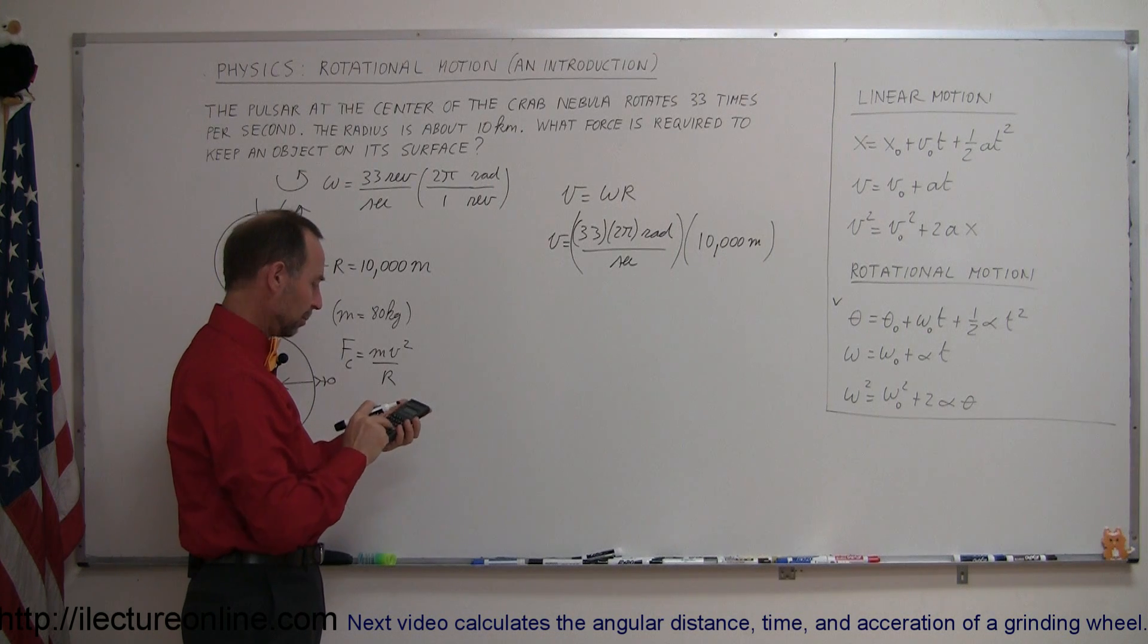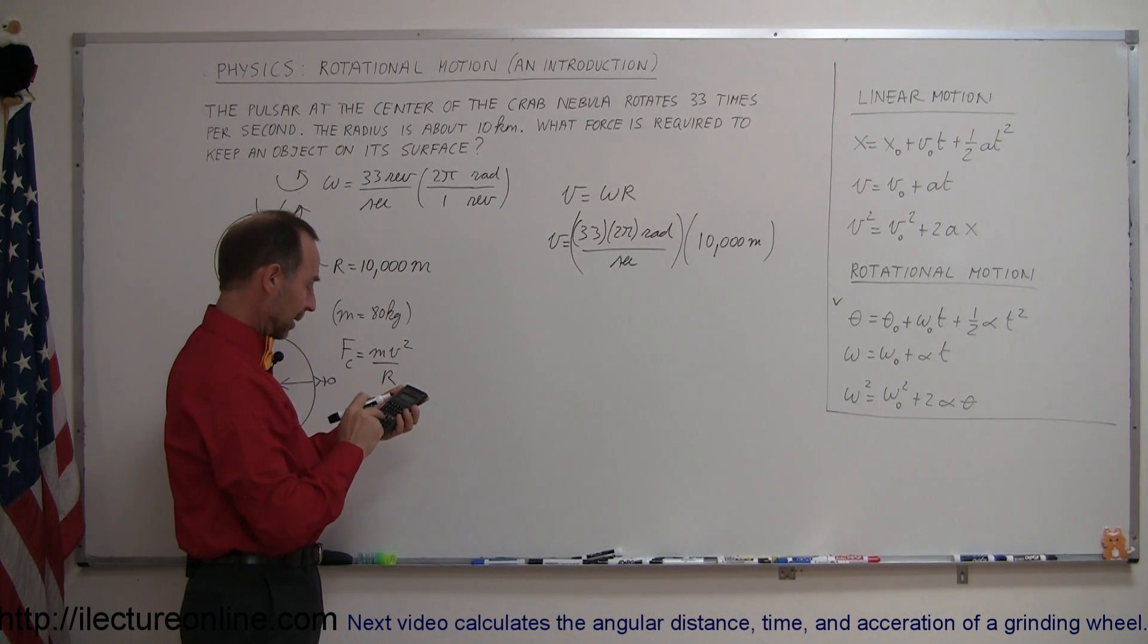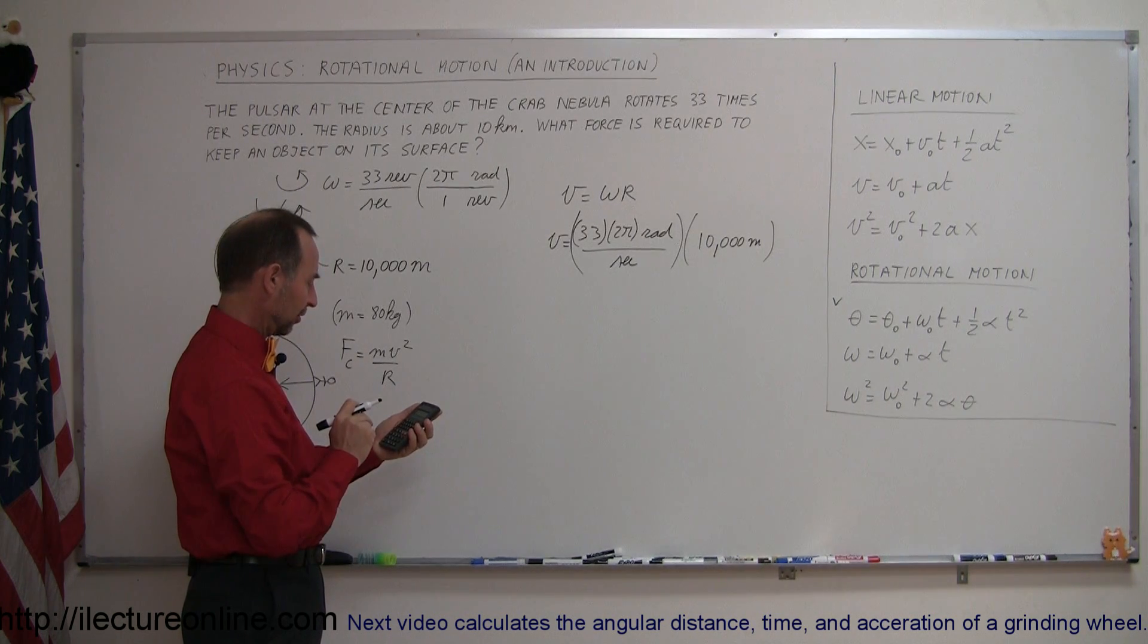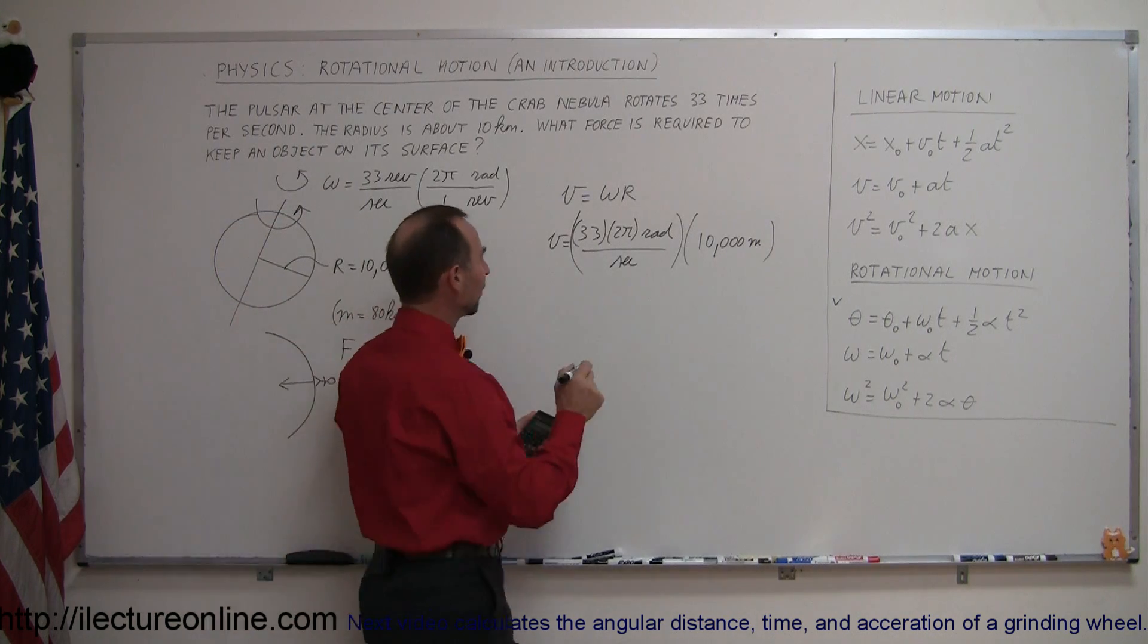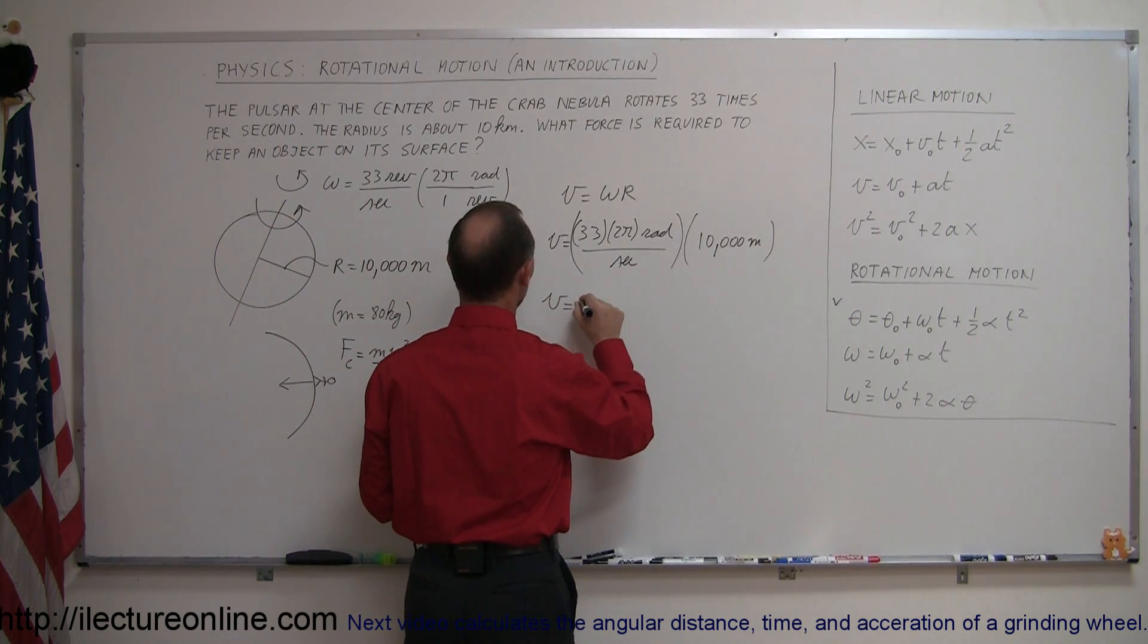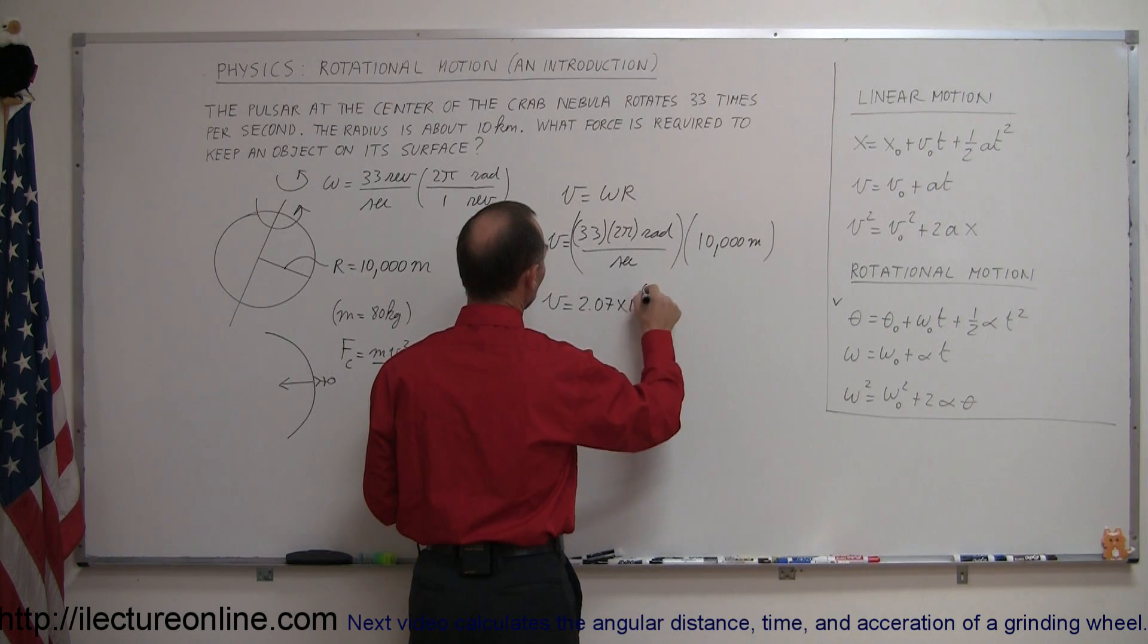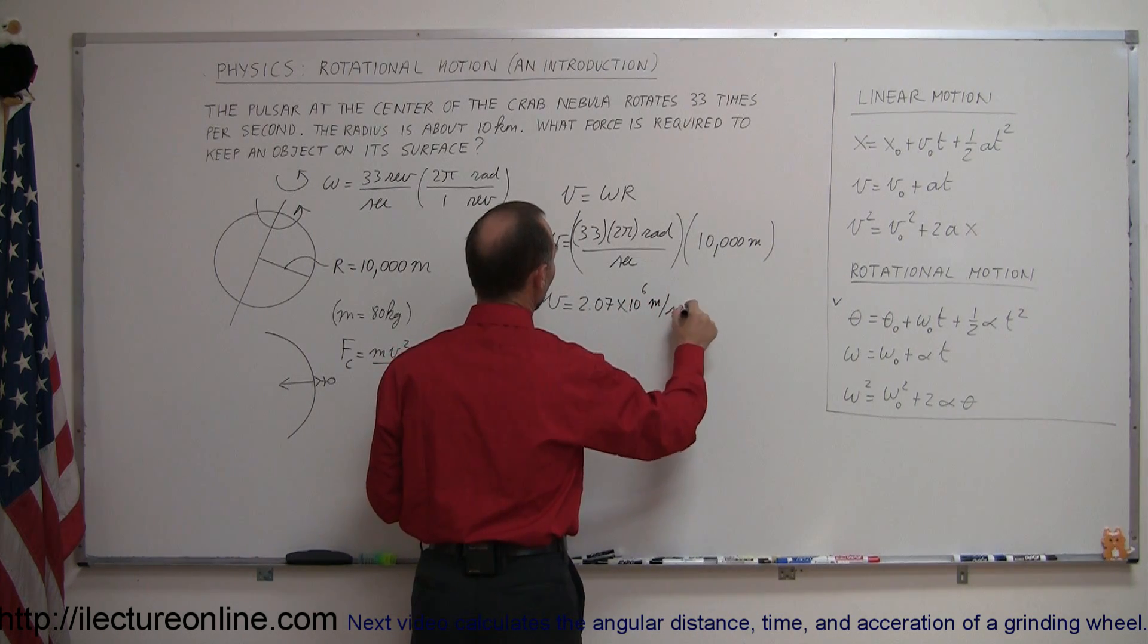So we have 33 times 2 times π, and then times 10,000. And it looks like 2.07 million, so velocity is equal to 2.07 times 10 to the sixth meters per second.